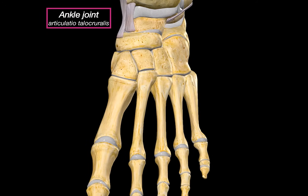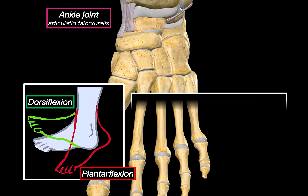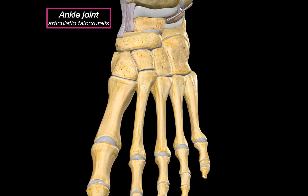So that's the structure of the ankle joint. Functionally, it primarily allows for dorsiflexion — pulling the foot upwards — and plantar flexion — pointing the foot downwards. It also allows for a small amount of inversion and eversion, but most of this movement actually comes from the joint just below, which we will talk about next.